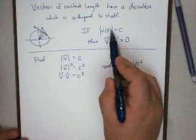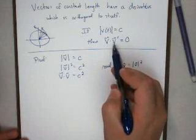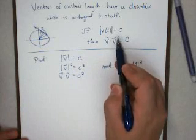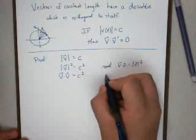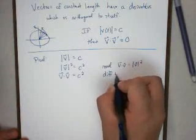That takes the absolute values and gets rid of them and just gives me a dot product, but now I need to get that derivative in there. So we're going to differentiate both sides.